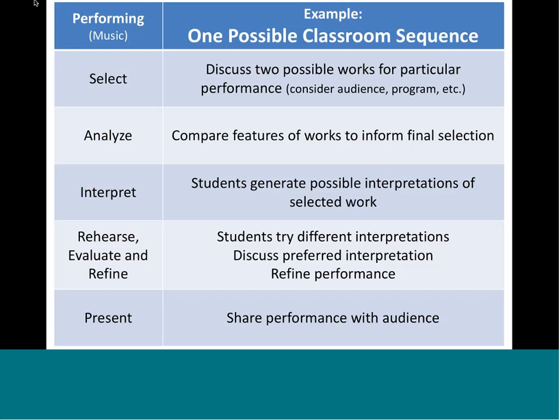Here's an example in music, taking that same performing process with its process components, showing what they might look like in a classroom. Rather than having kids pick all the pieces for an ensemble, you can present two possible works to consider — maybe for a particular occasion or audience. Go through the process of educating the kids about these works, help them discover what there is to know, and ultimately choose works to prepare for performance. In visual arts, think about it in terms of an exhibit: what do we want to say? What's our exhibit about? What are we going to put on display, and how do we sequence it so it has meaning for the audience?